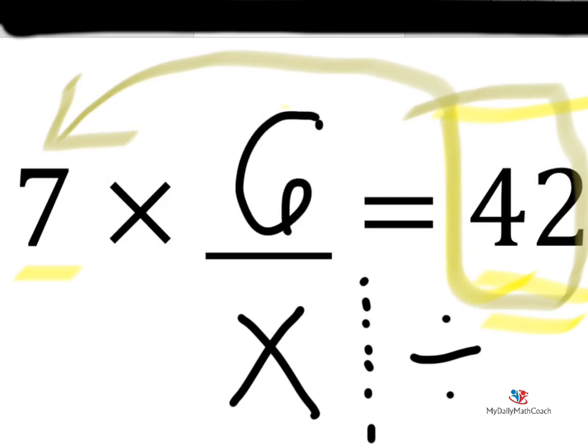And this works every single time if you're trying to find the hidden number with multiplication. Just use the strategy of opposite operations.